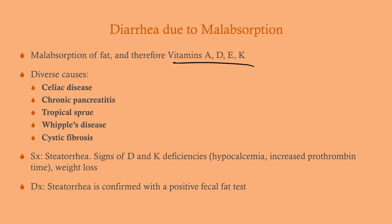What are the symptoms? The patient is going to notice the diarrhea — it's a steatorrhea, a fatty, greasy, bulky diarrhea that does not flush down the toilet. They may have signs of vitamin D and K deficiencies, so that would be hypocalcemia and increased prothrombin time — they're bleeding more. They can also have signs of weight loss. If you're not absorbing fat, you're not pulling in the calories. A burger that's 800 calories is only about 400 calories if you're not absorbing the fat, so you can lose weight very quickly.